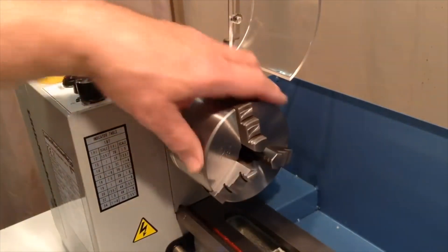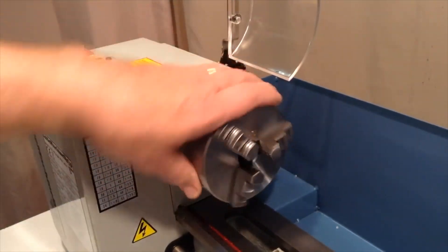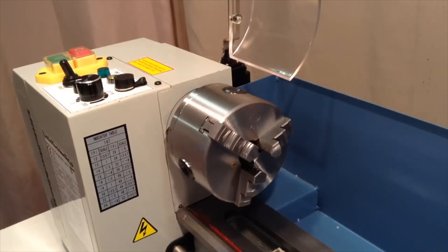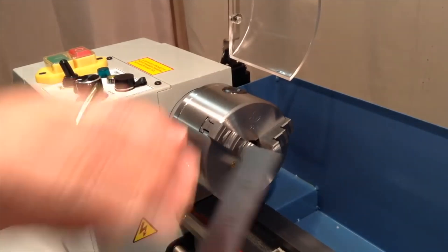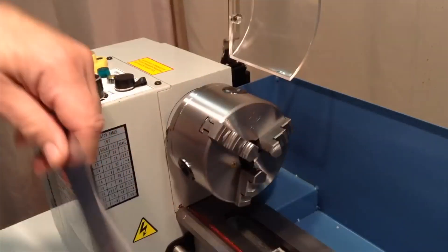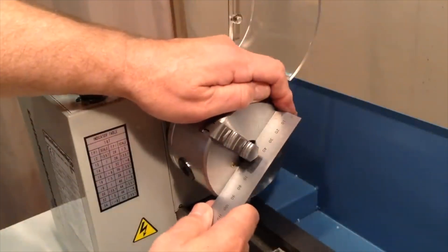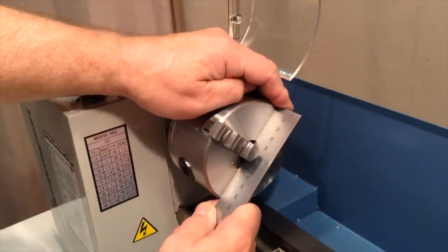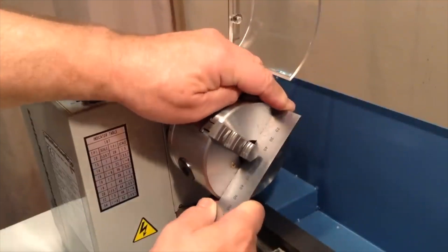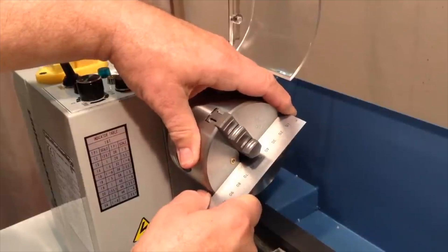The standard chuck that comes with this lathe is a four inch diameter three jaw. That's the approximate equivalent in inches, but it's actually a metric specification - in this case it's 100 millimeters. So 100 millimeters is approximately four inches.